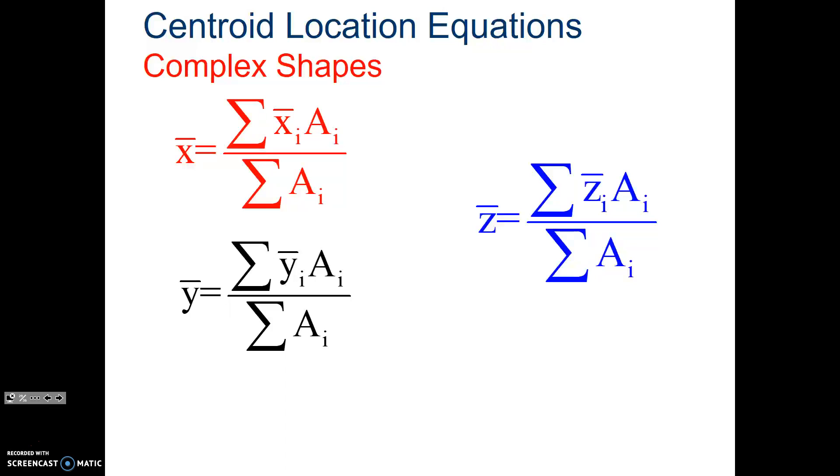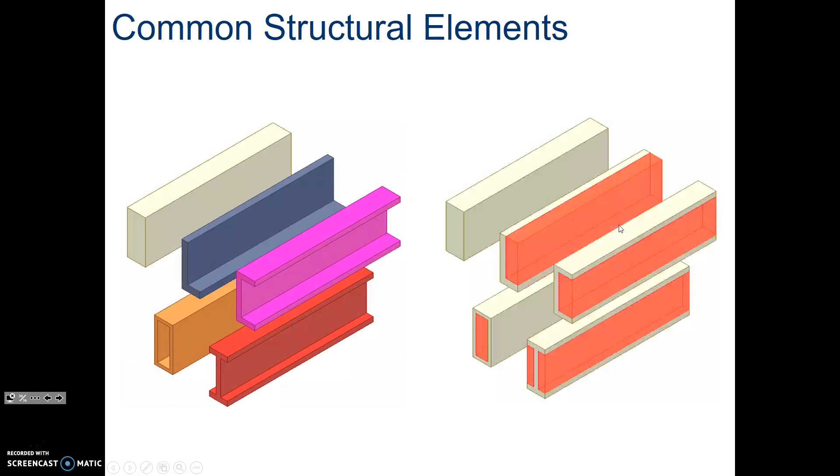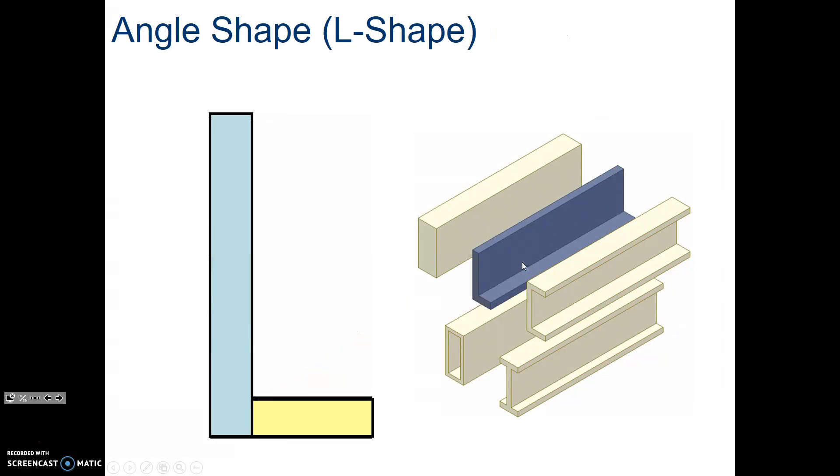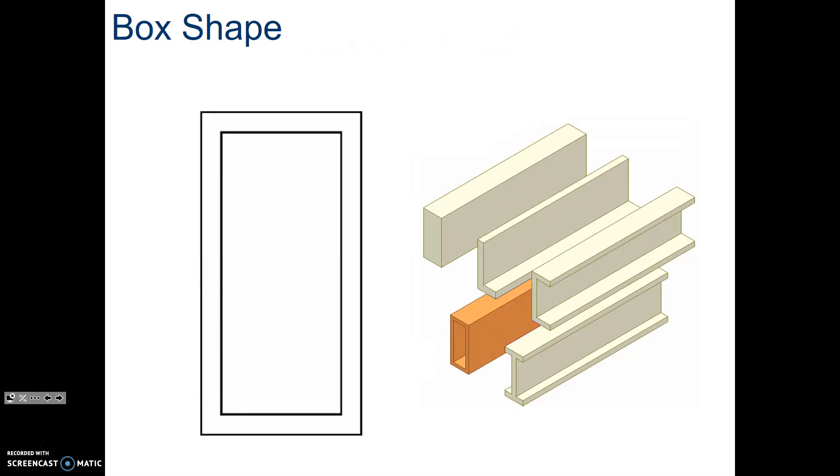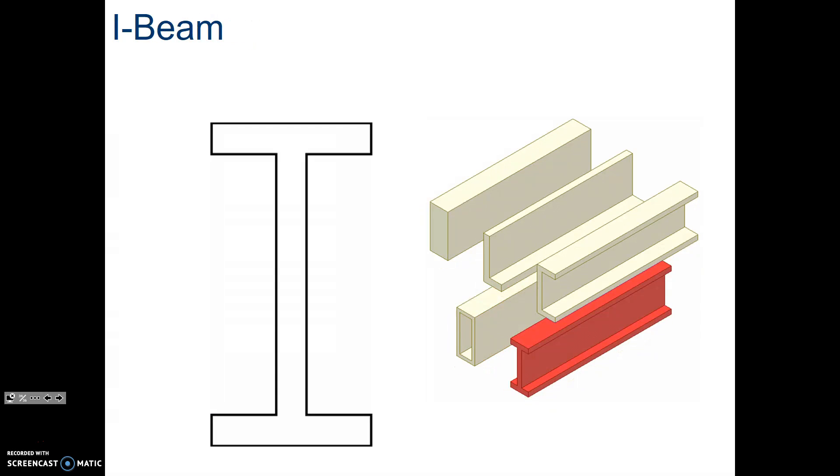Those are our equations. And you can do this even in the z-axis, but we won't deal with that. We can even look at some common shapes. Squares, L brackets, C channels, I beams, hollow beams. They are just a hole, just with stuff missing. And we can change the look of the C channels in various different ways. We can look at the shapes, break them up into different shapes.